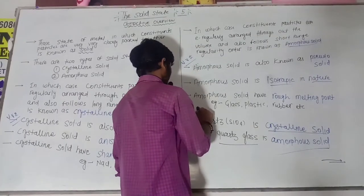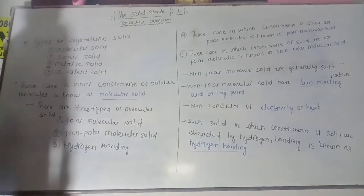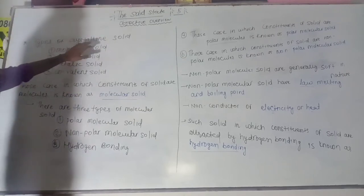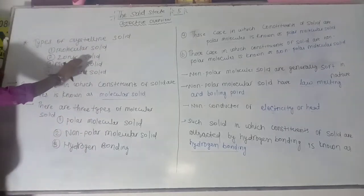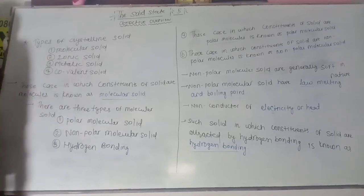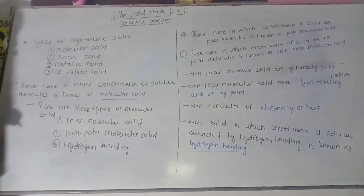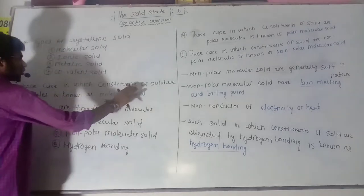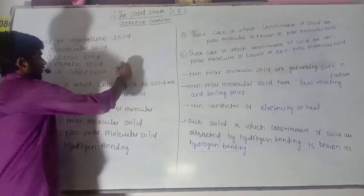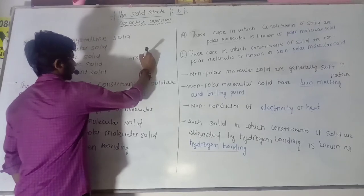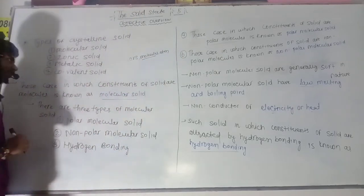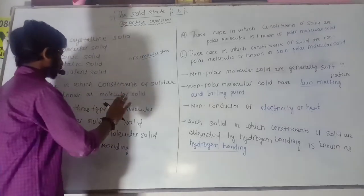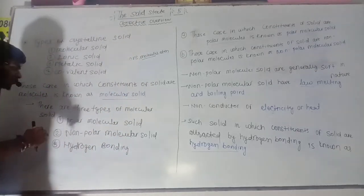Now let's talk about crystalline solids further — crystalline solids are of four types. The four types of crystalline solid are: first, molecular solid; second, ionic solid; third, metallic solid; and fourth, covalent solid. In molecular solid, the constituent particles of the solid are molecules.